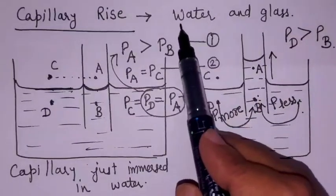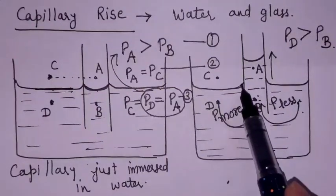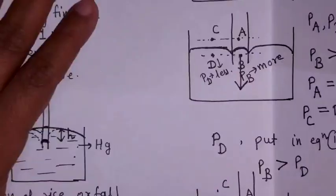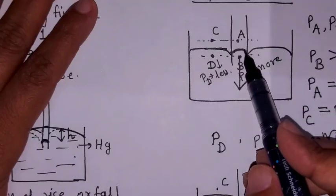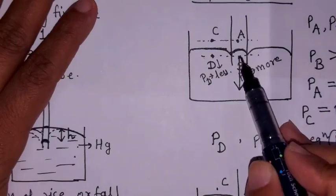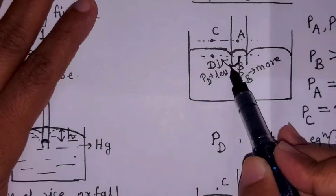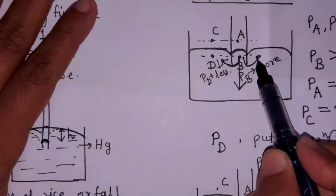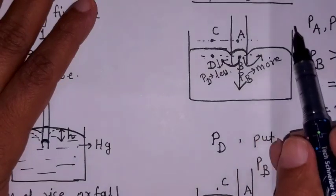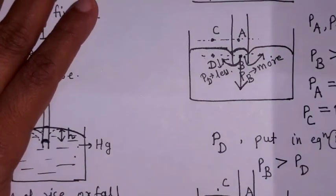In the case of water wetting the glass surface, the angle of contact is acute and the surface is concave, causing capillary rise. For mercury and glass, the pressure inside the capillary was more, so mercury rushed from high pressure to low pressure, causing the mercury level to fall — this is called capillary fall.